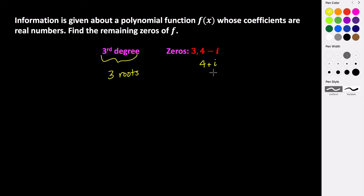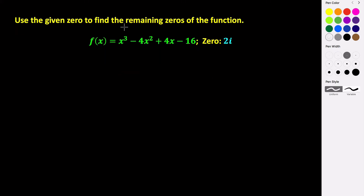This was a pretty simple case, but let's expand on this and use this idea to find all of the zeros of an actual polynomial function. In this example, we are going to use the given zeros to find the remaining zeros. This is a third-degree polynomial, so we're looking for three roots. We're given one root, 2i, and because this is an imaginary zero, we know that its conjugate pair, negative 2i, is also going to be a zero.